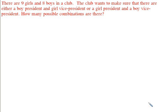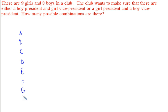For the second problem: there are nine girls and boys in a club. The club wants either a boy president and a girl vice president, or a girl president and a boy vice president. How many possible combinations are there? Let's label the girls A, B, C, D, E, F, G, H, I — that's nine girls.